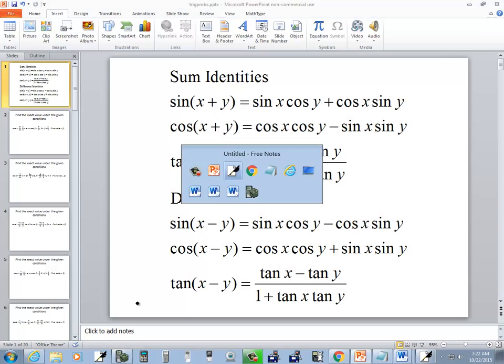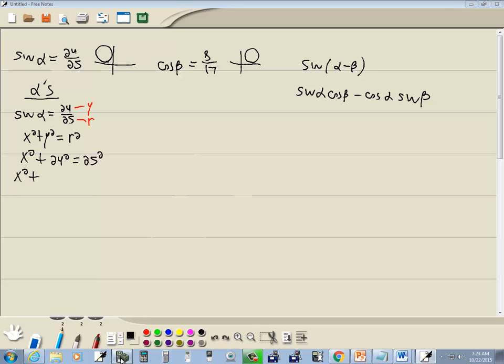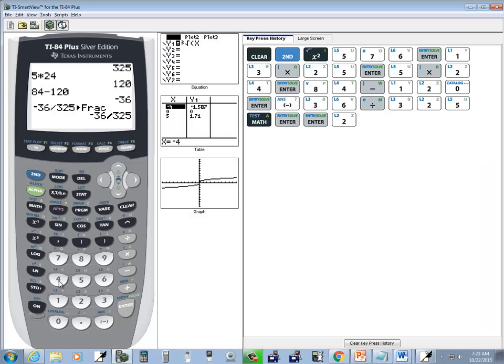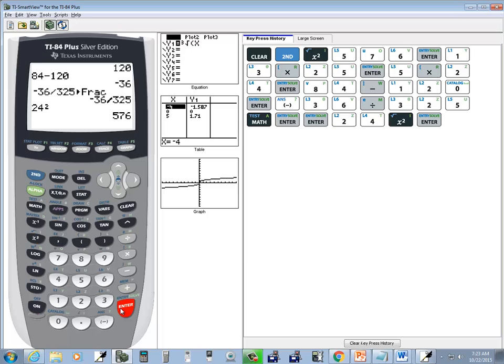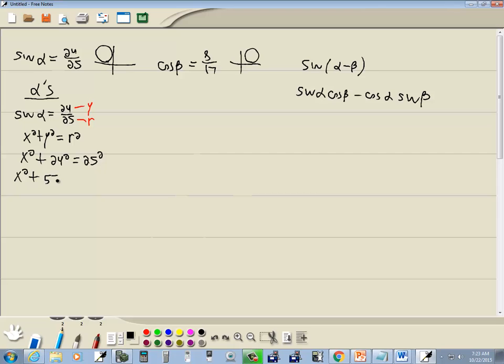24 squared. So 24 squared is 576. And 25 squared is 625. Take the 576 over. And that gives us 49. Double check that. Yeah, 49.